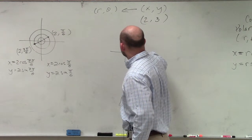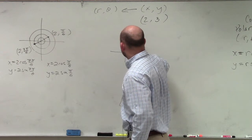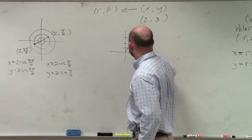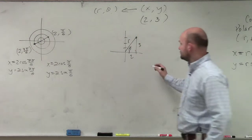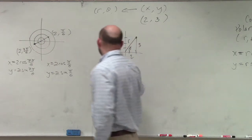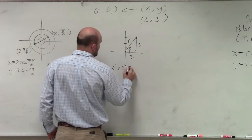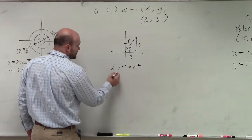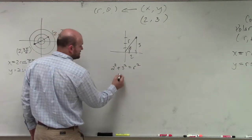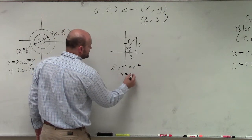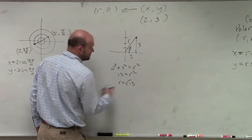If we want to find our distance and our angle theta, think of it like a triangle. So you'd have 2 squared plus 3 squared equals r squared. So therefore, that's going to be 4 plus 9, so that's going to be 13 equals r squared. r equals the square root of 13.